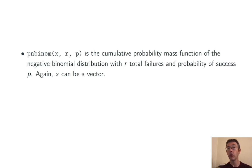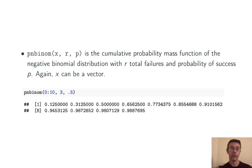pnbinom is the cumulative probability mass function. And again, x can be a vector.